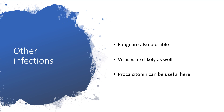Procalcitonin will help us distinguish between virus and bacteria, though it won't tell us the type of bacteria. We can go further and have MCS done. Even if we are sure it is bacteria and we have administered our antibiotics, procalcitonin can help let us know if we are winning, if we need to change the antibiotics, increase the dose, or whatever we need to do.